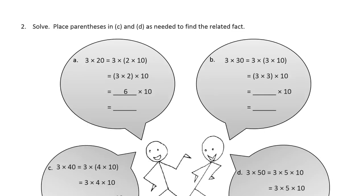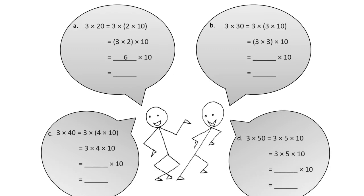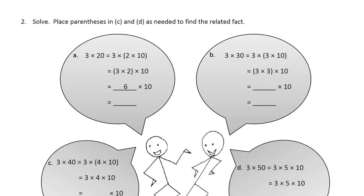Solve and place parentheses in C and D as needed to find the related fact. All right, so let's just finish A and B first. Three times twenty is the same as three times two times ten. You could also look at it as three times two, which would be six. And six times ten is sixty.